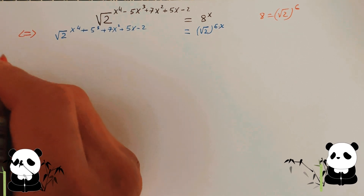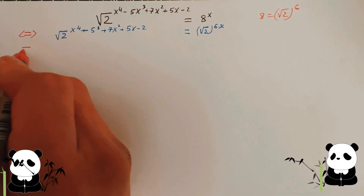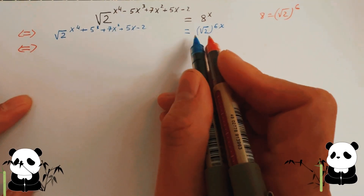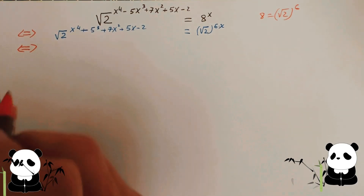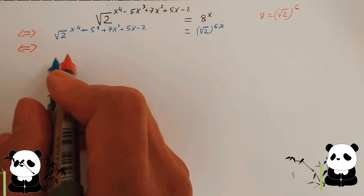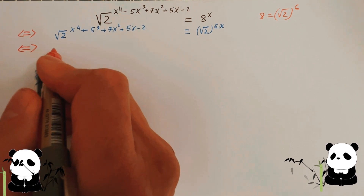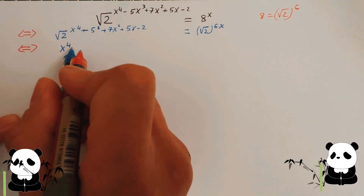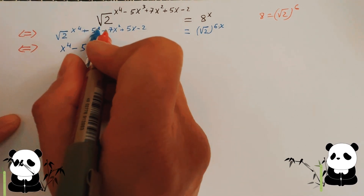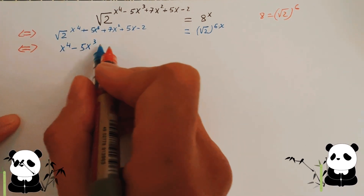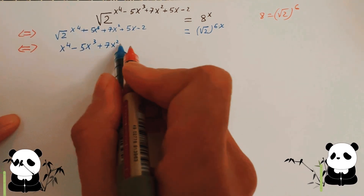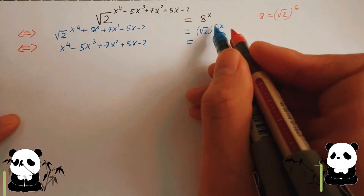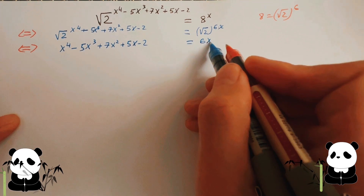Now you can see the left and right hand sides both have square root two as a base. So if both sides are equal, you just equate the powers. The power on the left is x to the four, take away five x cubed, plus seven x squared, plus five x, and the power on the right is 6x.